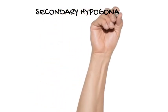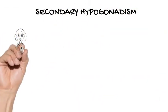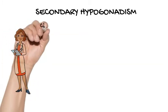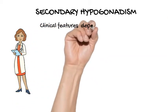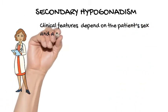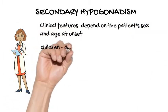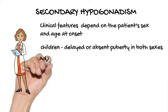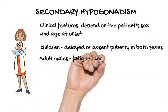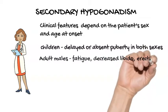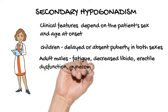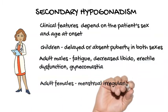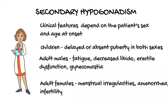Secondary hypogonadism. Clinical features depend on the patient's sex and age at onset. In children, it presents as delayed or absent puberty in both sexes. Adult males present with fatigue, decreased libido, erectile dysfunction, and gynecomastia; physical examination may reveal diminished facial and body hair, decreased muscle mass, and soft testes. Adult females present with menstrual irregularities, amenorrhea, infertility, and other symptoms of estrogen deficiency such as hot flashes and vaginal dryness. Long-term hypogonadism causes osteoporosis in both sexes.